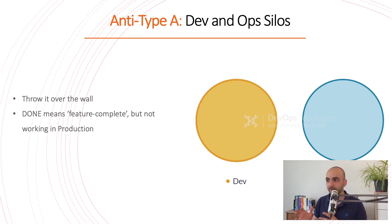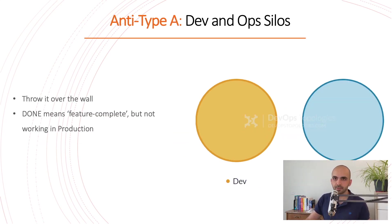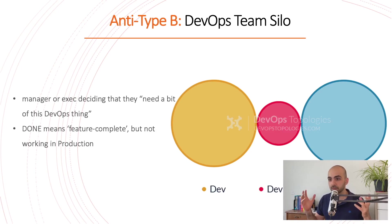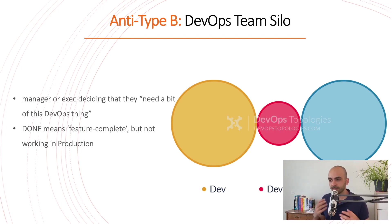That's anti-pattern A — don't do that. Anti-pattern B is also a classic. In the previous organization, an exec came in and said 'we need some of these DevOps things to have a modern organization,' so they invented a DevOps team, hired some people, and very quickly the DevOps team became a silo by itself. Now you have three silos — nobody wants to deal with that. 'Done' still means feature complete but not working in production.